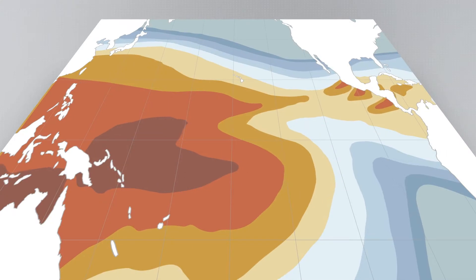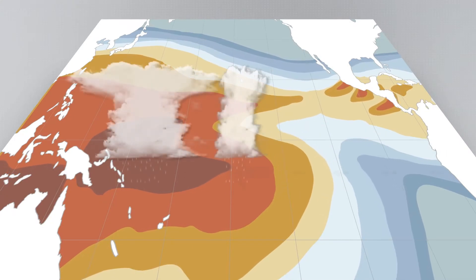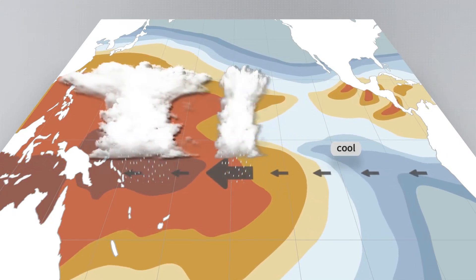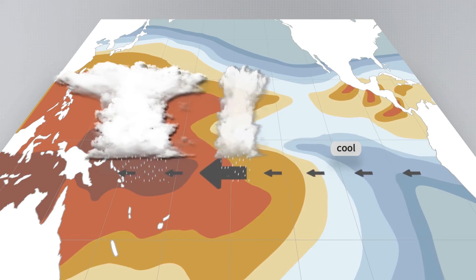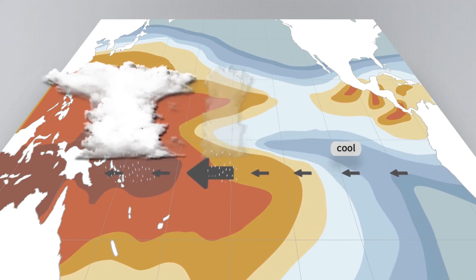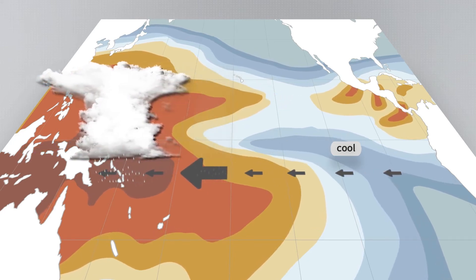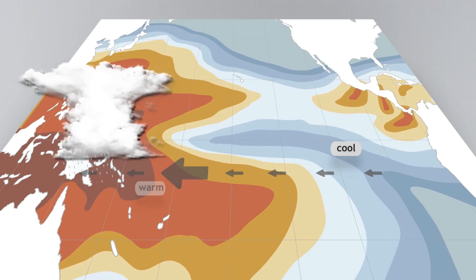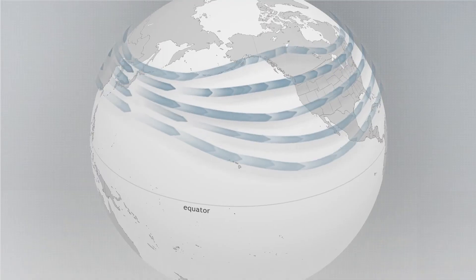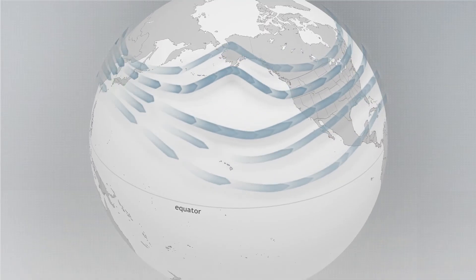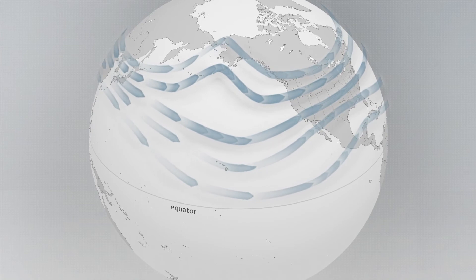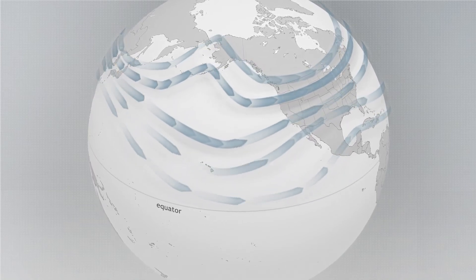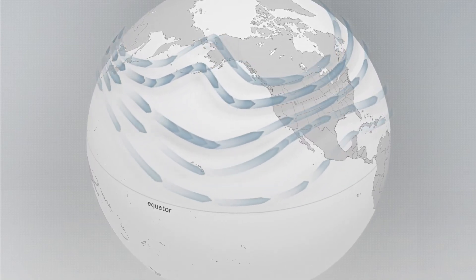The most powerful climate indicator for worsening or improving drought is the state of the El Niño-La Niña Southern Oscillation, or ENSO. ENSO is an example of a teleconnection, a climate pattern that can influence conditions over large areas in both the short and long term.